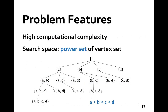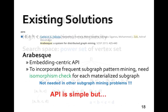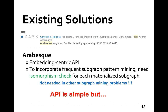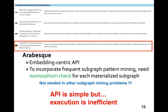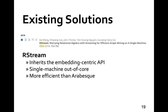Recall that our set enumeration tree perfectly divides the search space and avoids redundancy by comparing vertex IDs. In summary, Arabesque's API is simple but not amenable to efficient execution. Removing the slow network communication can speed up computing, as done by the rStream system, but as a single-machine system running out of core, rStream is still disk I/O bound.